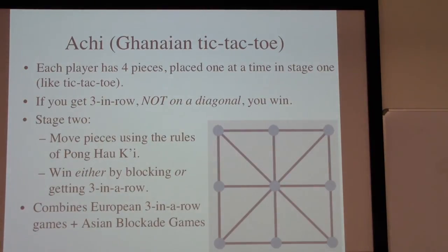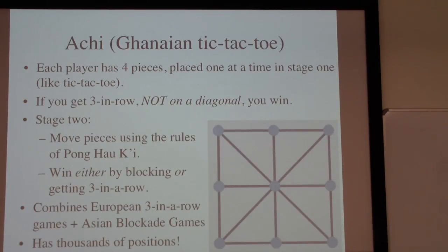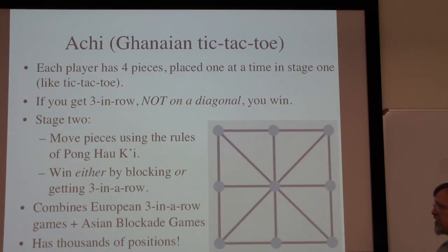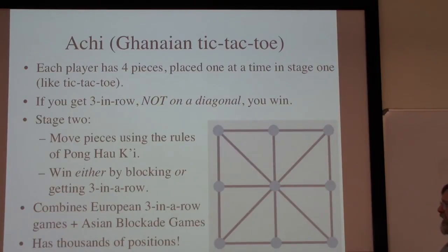Another three-in-a-row game we're going to spend more time on is called Achi, from Ghana in western Africa. We're basically playing it on a tic-tac-toe board, but it's going to mix some of these blockade strategies with three-in-a-row strategies. There are nine spots; each player begins with four pieces and places them one at a time in stage one, acting like tic-tac-toe — except three in a row on the diagonals does not count. In stage two, we then proceed to move the pieces along the edges exactly like Pong Hao Qi. With four pieces each on nine spots there's always one open spot, making it a maximal blockade game. But you can win either by blocking your opponent or by getting three in a row, so you have lots of different threats. This game really has thousands of possible positions, so a game chart for Achi is essentially impossible for people to do — in somewhat recent years computers have constructed the entire game chart for Achi.